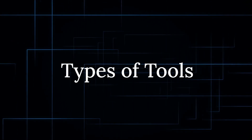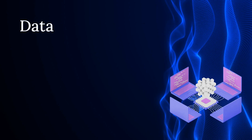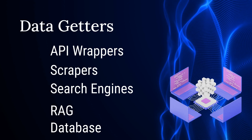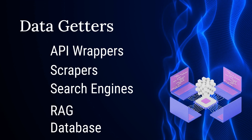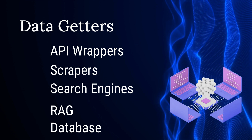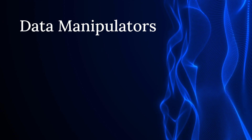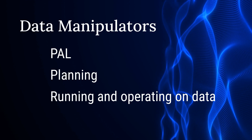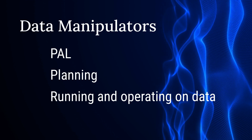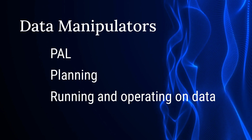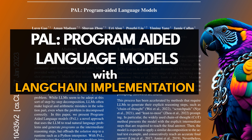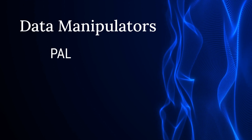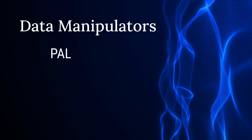Looking at common types of tools: the first are your data getters — things that go out and get data, like API wrappers, scrapers, search engines, RAG, or direct database lookups. The second type are data manipulators — tools that take output generated by the LLM and manipulate that data to generate something to put back in. A classic example is the PAL model (program-aided language), where instead of answering a math question directly, the LLM generates Python code which is then run through a REPL, and the result is passed back.